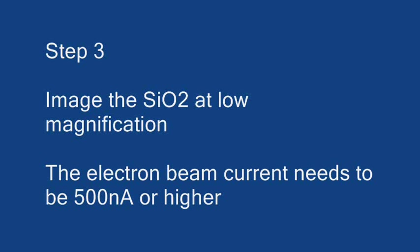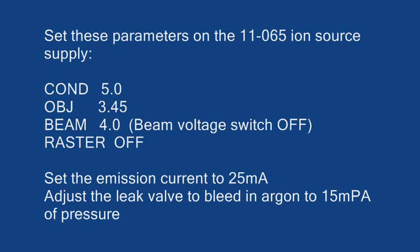Now that we have the sample loaded, we're going to want to get an image of the sample using the electron gun, typically an SCD image, secondary electron. You're going to set your ion source to these conditions. Condenser's going to be at 5, objective about 3.4, beam voltage at 4, raster off. Set the emission to 25 milliamps, and bleed in argon to about 15 millipascals of pressure.